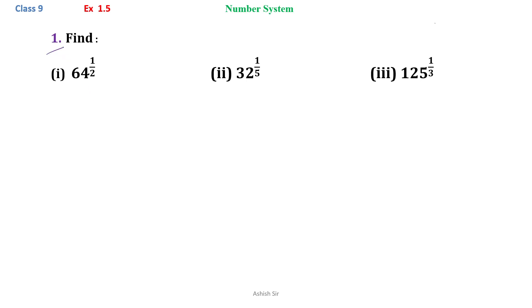Exercise 1.5, question number 1. Find 64 to the power 1 by 2. Here we will find that 64 can be written as 8 to the power 2, to the power 1 by 2. We know that in bracket, we multiply the powers. So we write 8 to the power 2 into 1 by 2, 2 gets cancelled, and we are left with 8. So 64 to the power 1 by 2 is equal to 8.